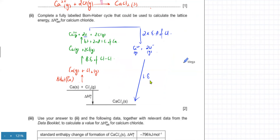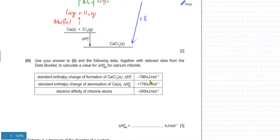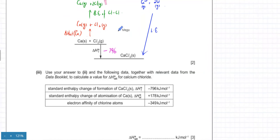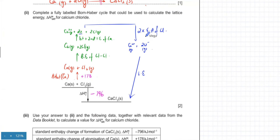That's your complete Born-Haber cycle: you atomize, make them into ions, and then the ions get together to form the ionic solid — that's your lattice energy. Now you're asked to calculate the lattice energy using Hess's law. The enthalpy of formation of CaCl₂ is given as −796 kJ/mol. The enthalpy change of atomization of calcium is given as +178 kJ/mol.